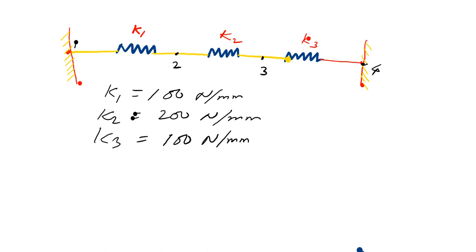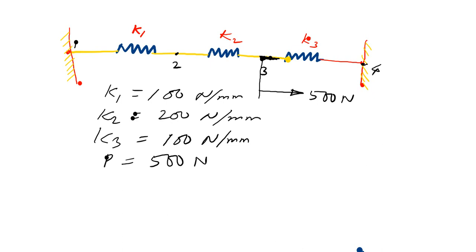The load will be applied at node 3. It is applied along the axis in a linear direction. The load is 500 Newton, so we say P is 500 Newton applied at node 3. This is the problem.